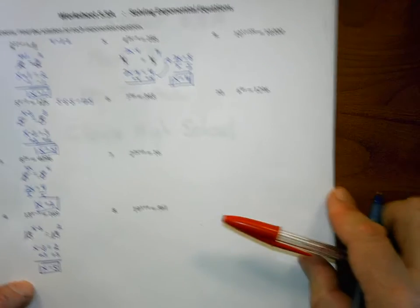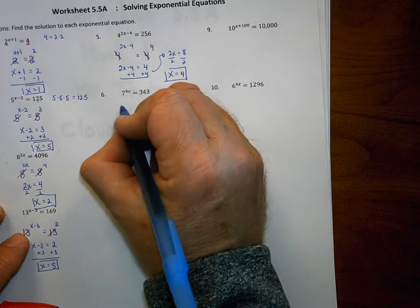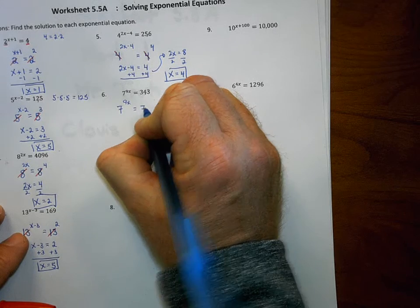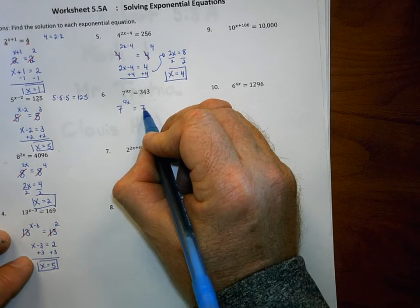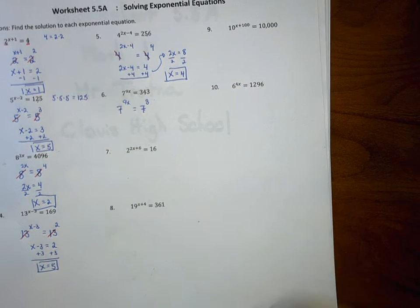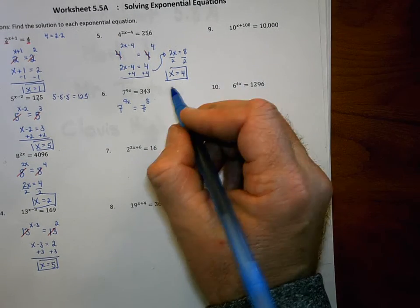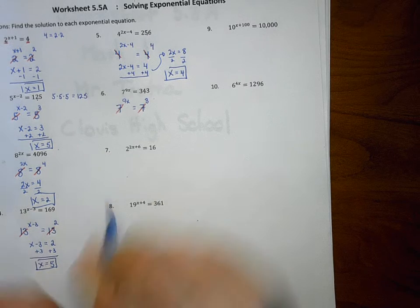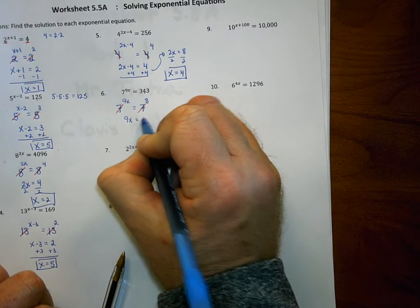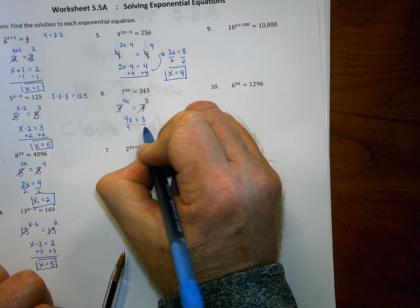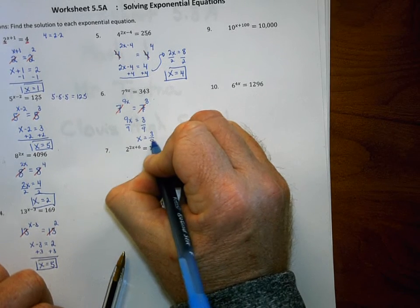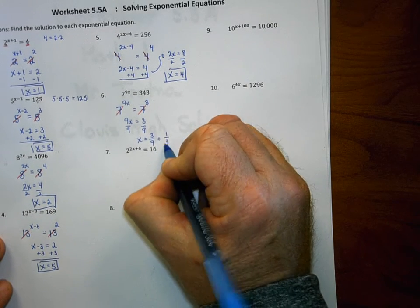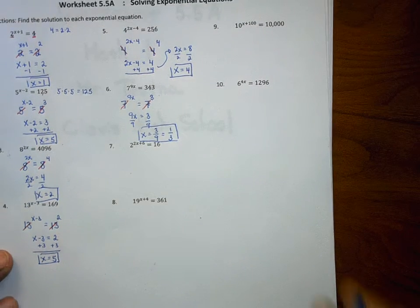Number 6: 7 to the power of 9x is the smaller base side, so I leave that as is. Then I take the larger side, 343, and make it a power of 7. 7 to the what power is 343? That's to the 3rd power — 7 times 7 times 7 is 343. The bases cancel each other out. The remaining equation is 9x equals 3. Dividing by 9, x equals 3/9. Since we reduce fractions, the solution to number 6 is x equals 1/3.